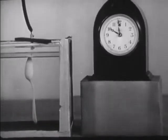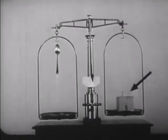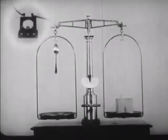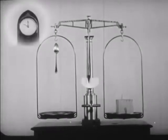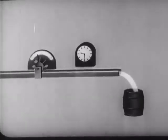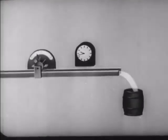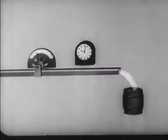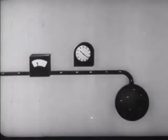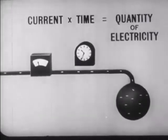The amount of silver deposited during this time depends on the product of the current by the time. Just as in flowing water the total quantity of water is the product of the rate of flow by the time of flow, so in the case of electricity, the product of current by time measures the total quantity of electricity.